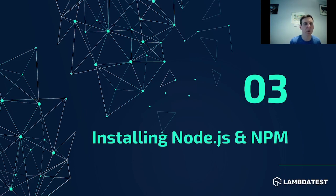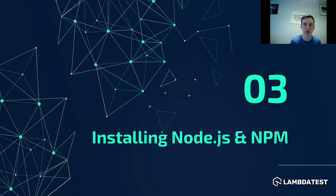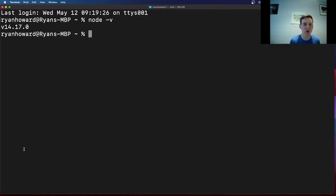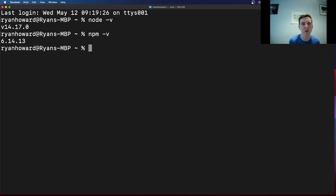Alongside Node.js we also need to ensure NPM is installed. NPM is a mechanism for downloading and installing third-party packages into your project. NPM is usually downloaded with Node.js. To confirm it is installed, navigate back to the terminal and type 'npm -v' and again we should get a version returned.